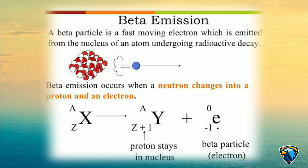Beta Decay: Beta emission occurs when a neutron changes into a proton and an electron.